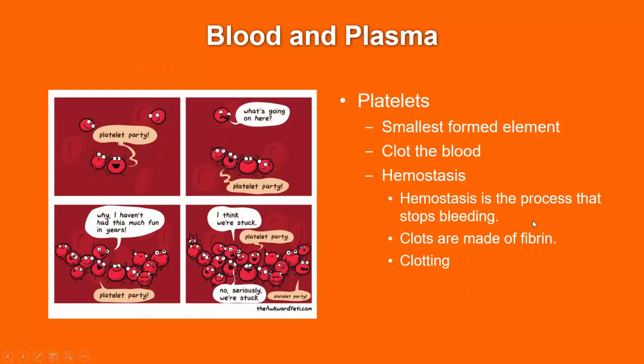Platelets are the smallest formed elements and are responsible for hemostasis — the process that stops bleeding. Approximately two-thirds circulate through the blood; the rest are stored in the spleen. Following vascular injury, platelets initially form a plug, and clotting proteins then toughen and complete the blood clot. Thrombocytosis is the production of too many platelets, which can create thrombosis. Hemostasis starts with a vascular spasm, then platelet plugging, then coagulation. Clots are made up of fibrin; thrombin converts fibrinogen to fibrin, calcium acts as a binding agent, and the clotting cascade is the process by which clotting factors work together to ultimately form fibrin.